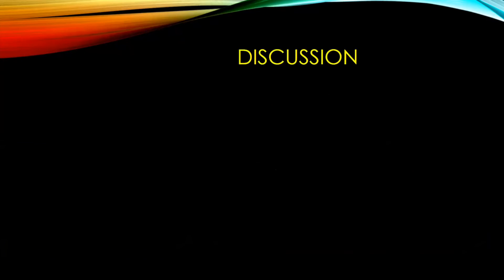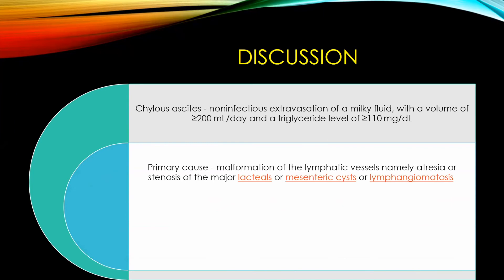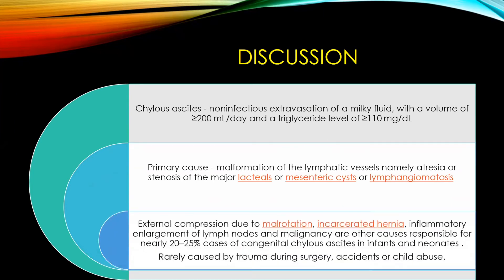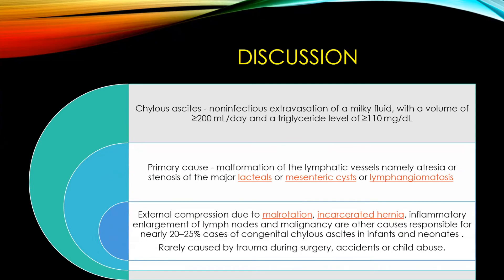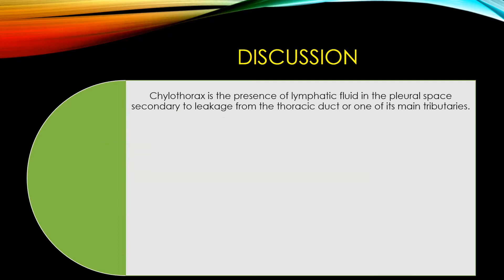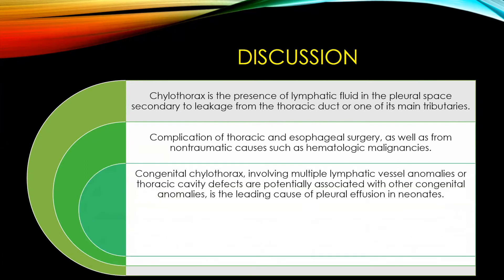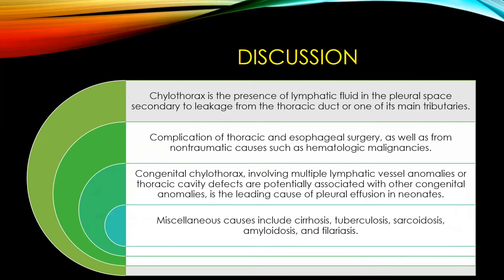Chylous ascites is defined as a non-infectious extravasation of milky fluid with a triglyceride level of greater than 110 mg/dL. The primary cause results from malformation of lymphatic vessels, atresia, or lymphangiomatosis. Secondary causes include external compression due to malrotation, incarcerated hernia, lymph node enlargement, or malignancy. Rarely it can be caused by trauma or child abuse. Chylothorax is the presence of lymphatic fluid in the pleural space secondary to leakage from the thoracic duct. Miscellaneous causes include cirrhosis, TB, sarcoidosis, amyloidosis, and filariasis.